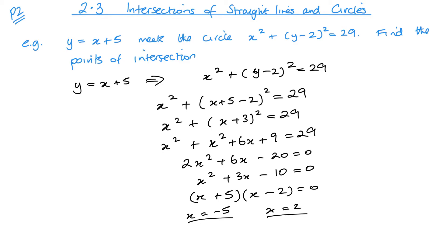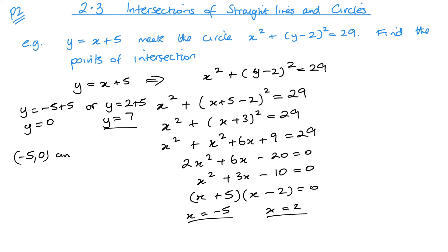Now I want to find the y-coordinates. I substitute back into the equation of the straight line, as that's the easiest to use. When x = −5: y = −5 + 5 = 0. When x = 2: y = 2 + 5 = 7. So the coordinates are (−5, 0) and (2, 7). Make sure you finish with the full coordinate — I've seen several times when people find the x-values and forget to find the corresponding y-values.